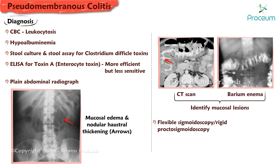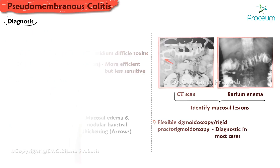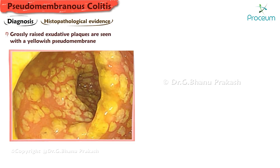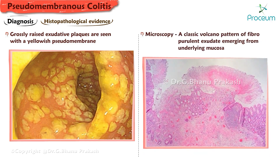Flexible sigmoidoscopy and rigid proctosigmoidoscopy are diagnostic in most cases. Histopathological evidence grossly shows raised exudative plaques with a yellowish pseudomembrane. Microscopy reveals a classic volcano pattern of fibropurulent exudate emerging from the underlying mucosa.